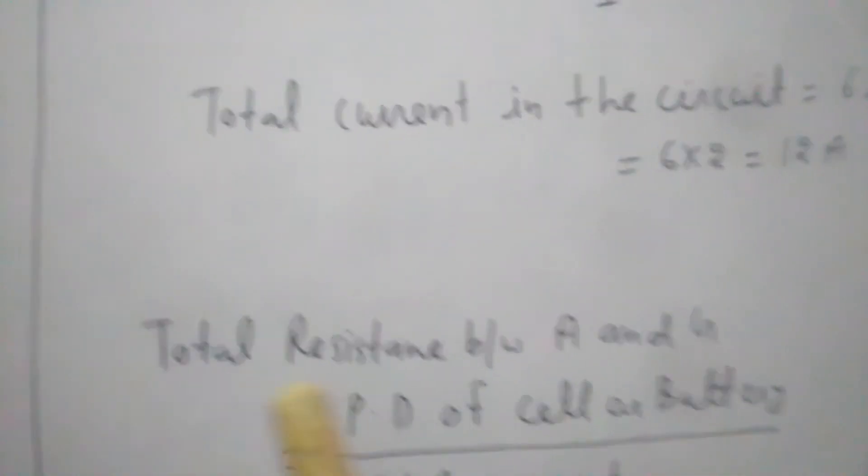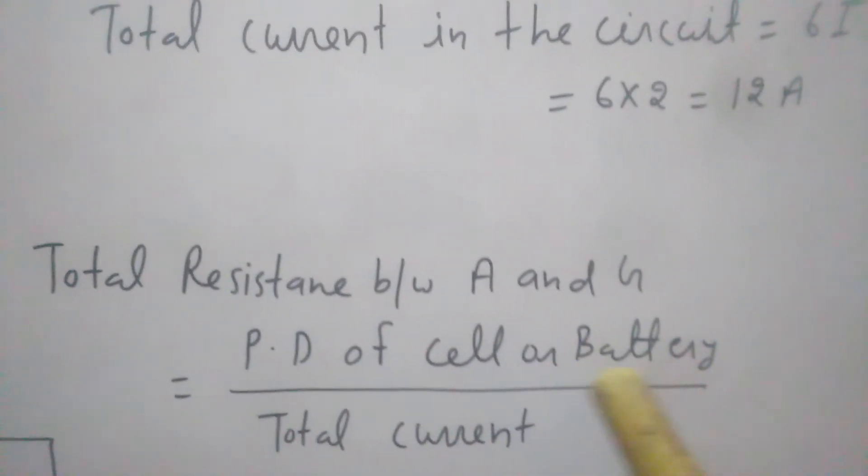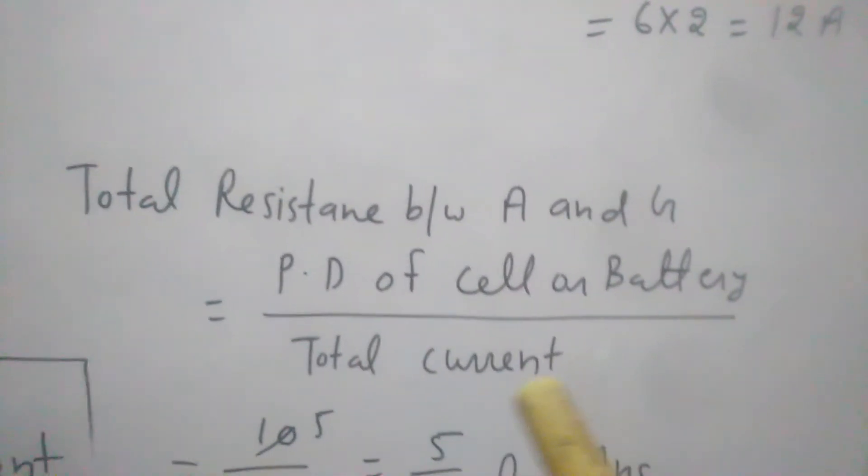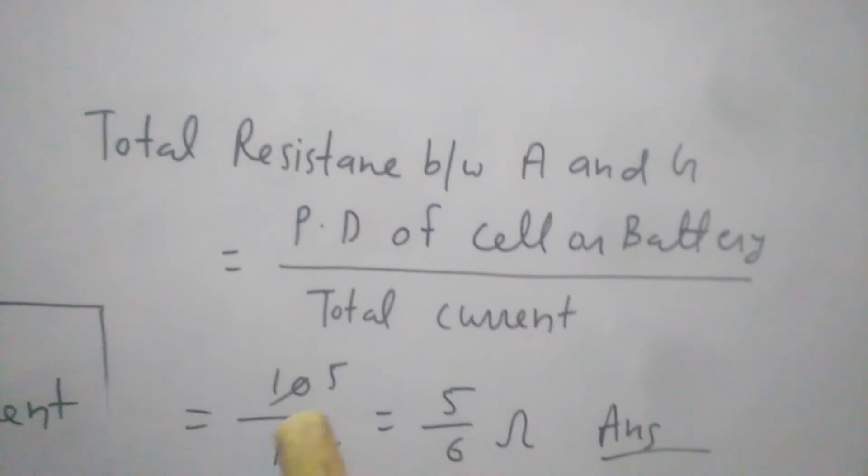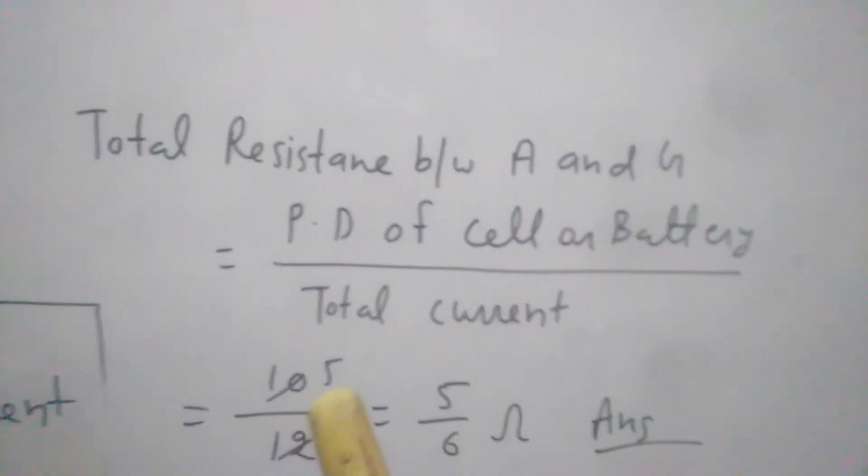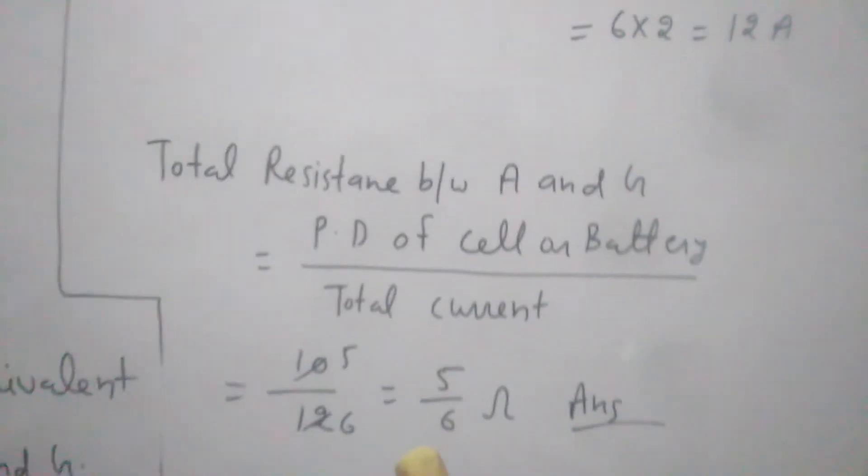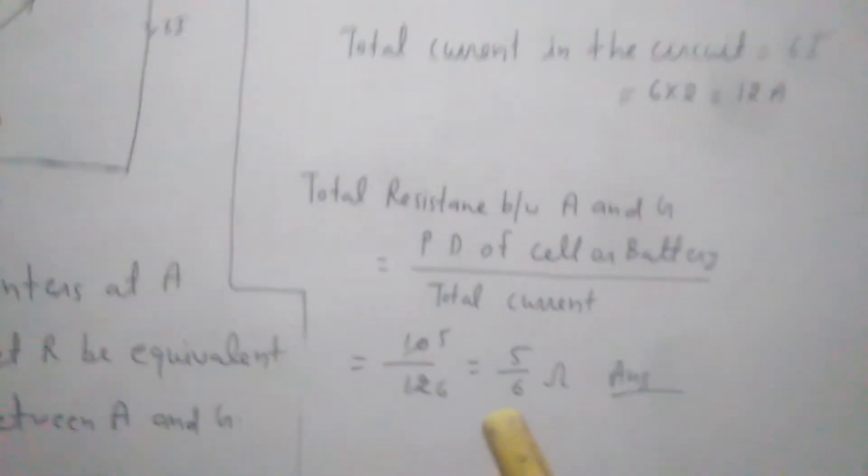Now total resistance between A and G - that is equal to potential difference of cell or battery upon total current. So this is equal to 10 upon 12. The total current was 12, so 10 upon 12, canceling we get 5 upon 6 ohm. So this is the total resistance between points A and G.